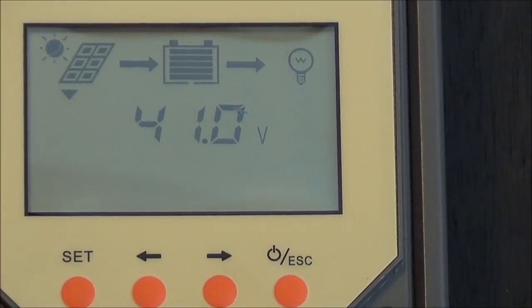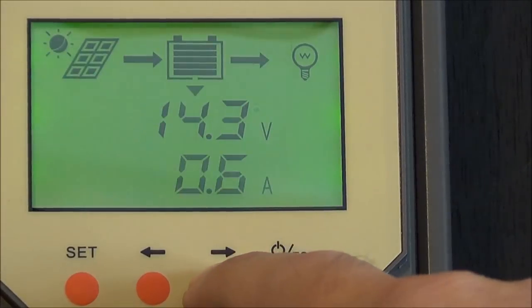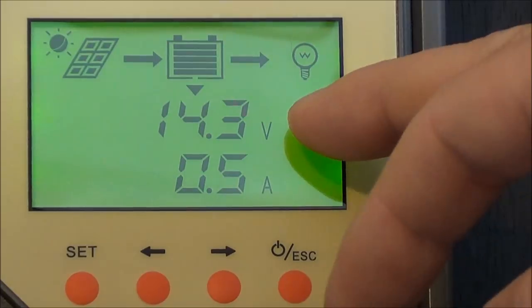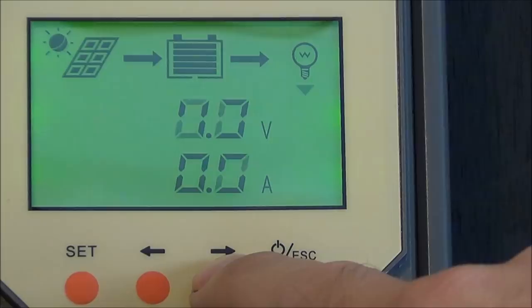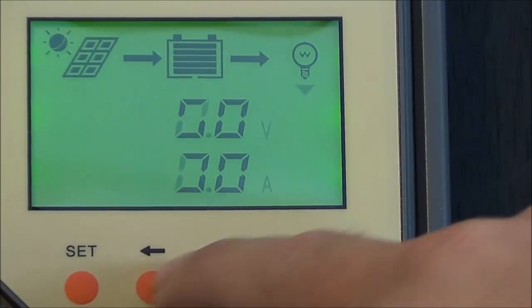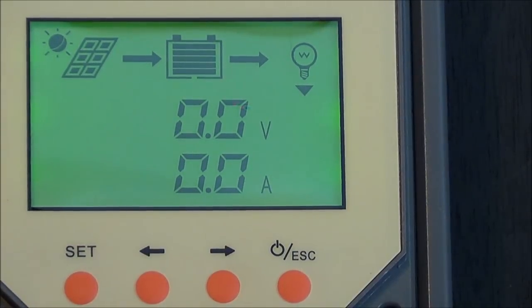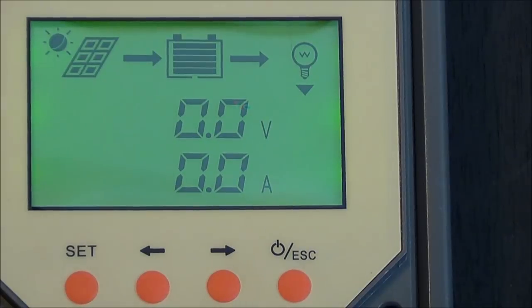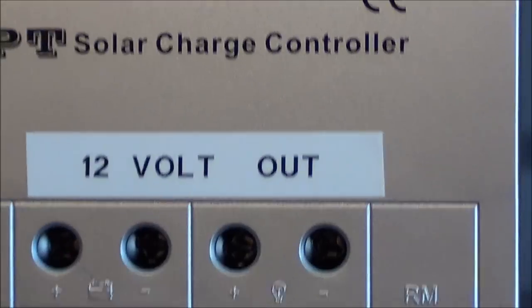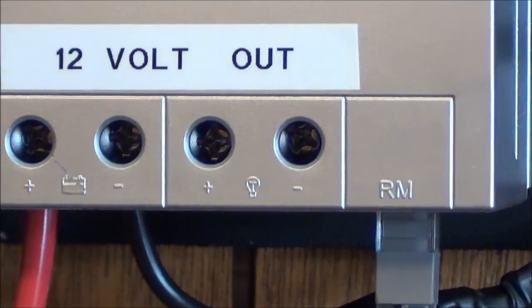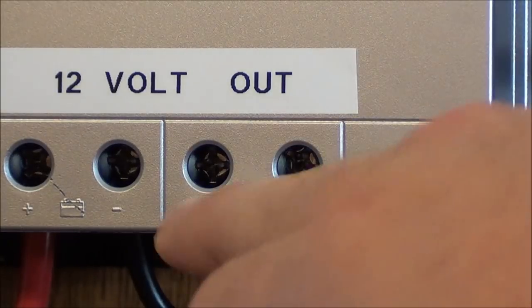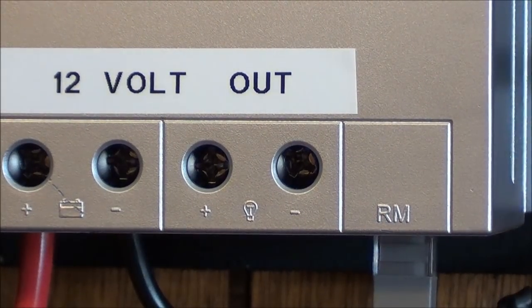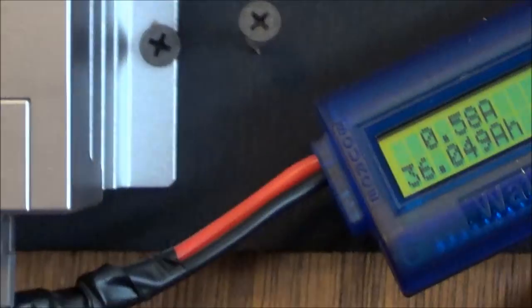So anyway, this does give you some information. Tells you what your voltage is on the panels. 14.3 volts on the batteries. Charging at about a half an amp. Just float charging. It will tell you how much is actually coming out of the output on this unit. You can turn this on and off. It's a DC output. I think it's up to 20 amps.